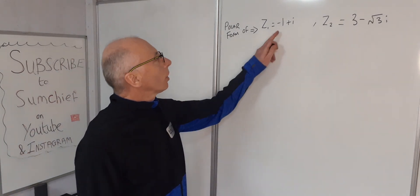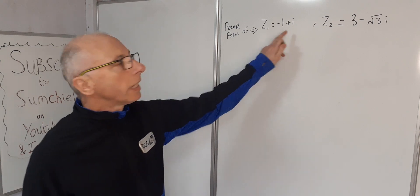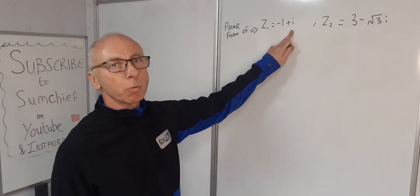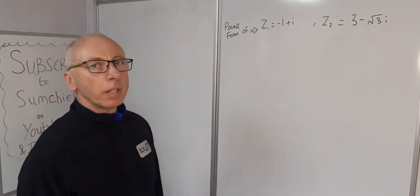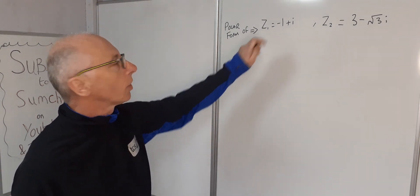Okay, so in this video we're going to convert our Cartesian coordinates of complex numbers into polar form. The two numbers we're looking at are -1 + i and 3 - √3i.